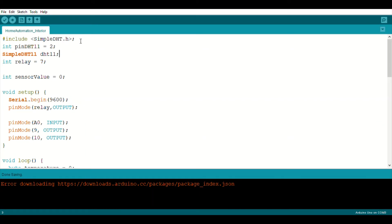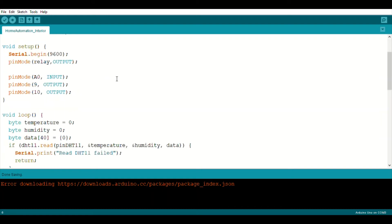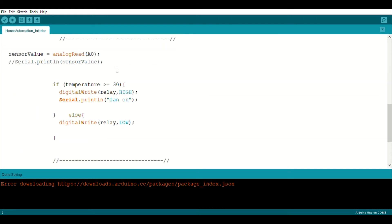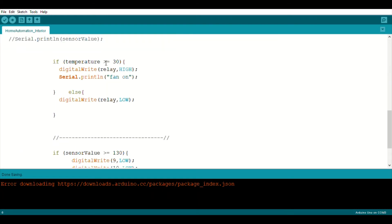Now let's see the interior phases, and don't forget to include the temperature sensor library. Let's have a look at the temperature sensor code. If the temperature is greater than or equal to 30 degrees Celsius—that means when it's hot—the relay should be high, which means the fan should be on as the fan is controlled through the relay. Otherwise, it can be low.